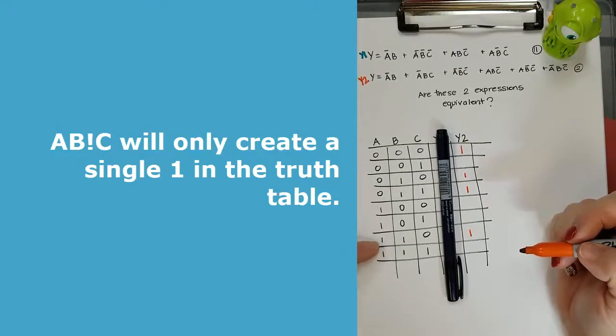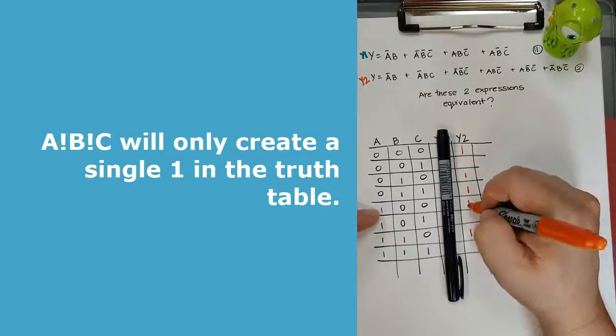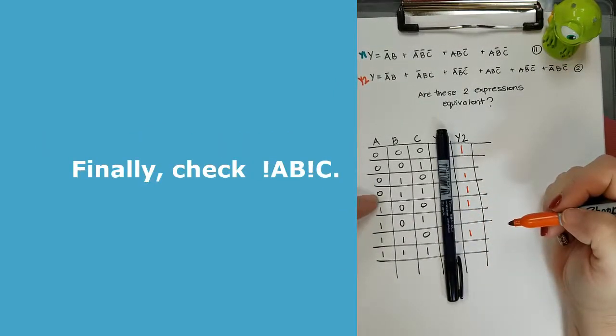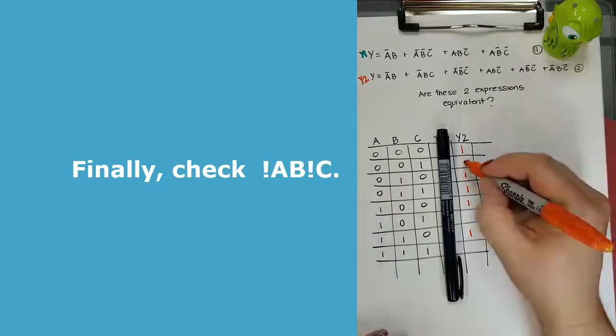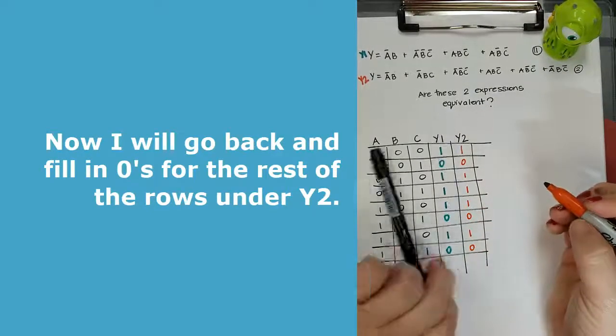So A, B, not C only made a single one in the truth table. And I enter that. Then I'm going to enter a one for A, not B, not C in the truth table. And then I'll look at the last term, not A, B, not C. There's already a one there. So I put zeros in the rest of the truth table.